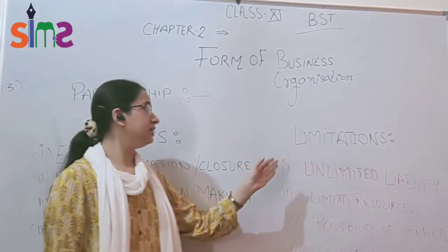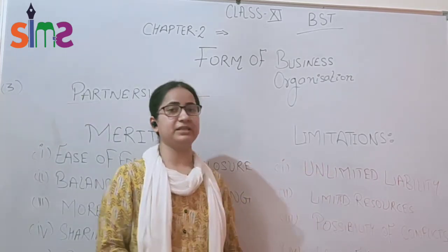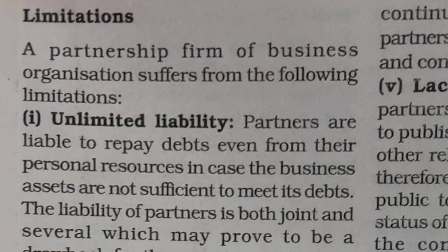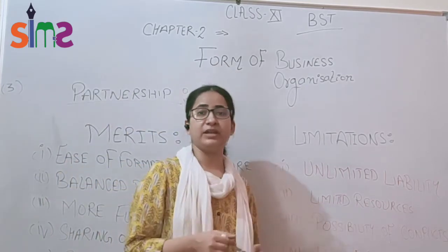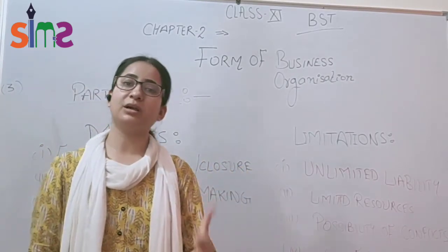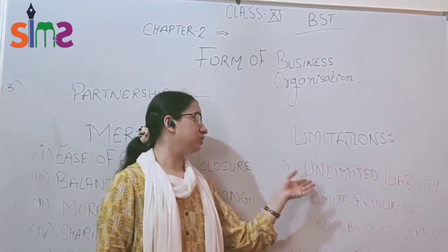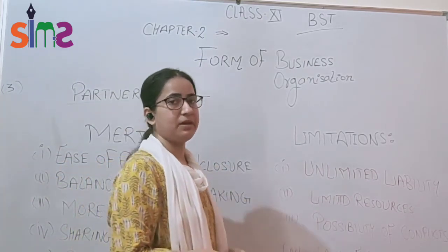Next are the limitations. The first limitation is unlimited liability. Suppose there are 4 partners and 2 of them are not in good financial condition at the time of repayment. When the business has a loan to pay, those two partners cannot contribute. As a result, the partners with good financial standing must use their own personal assets to pay for it.